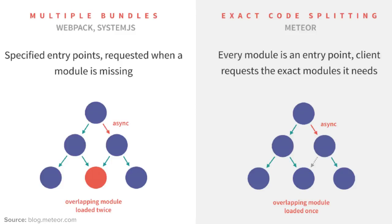Here I have a nice diagram from the official Meteor blog website describing what's going on. On the left, a diagram describes the usage of any other traditional bundler like Webpack or System.js. With Webpack, if you would like such a mechanism it's pretty complicated — you'd have to define multiple entry points, and it still doesn't guarantee you won't have overlapping modules loaded twice. The configuration file can get pretty complex quite rapidly. However, if you look at the diagram on the right describing Meteor's bundling system, it uses zero configuration — you simply import modules wherever you want, whenever you want, and Meteor takes care of it.